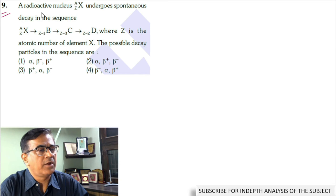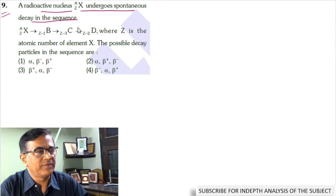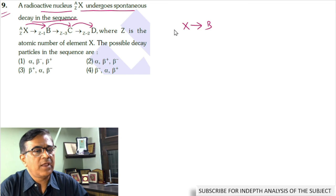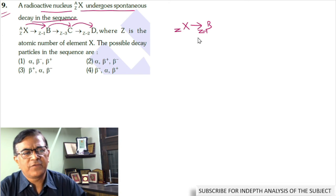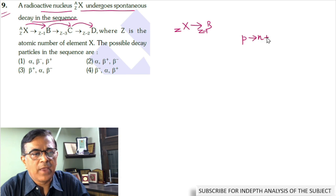In this problem, a radioactive nucleus X undergoes spontaneous decay in the sequence X changes to B, B changes to C, and C changes to D. When X changes to B, the atomic number Z decreases to Z minus 1. This is possible when a proton changes to a neutron by emitting a positron along with a neutrino. Thus, when X changes to B, beta positive or positron is emitted.